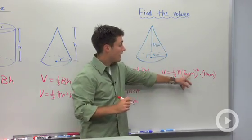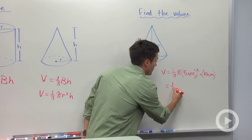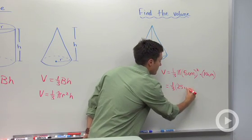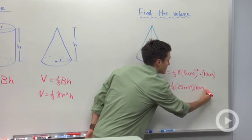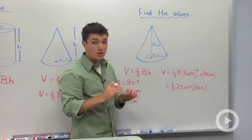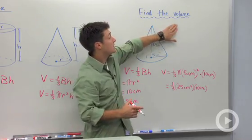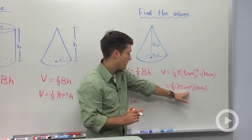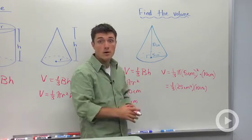So if we do five squared that's going to be twenty-five. So we're gonna have one-third twenty-five square centimeters times ten centimeters. Now we're gonna check our dimensions here. We should have something to the third dimension because it's asking us to find volume. And since we have centimeters squared times centimeters, that's going to be centimeters to the third or cubic centimeters.